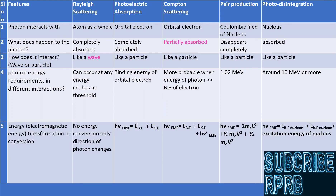Energy transformation or conversion: X-ray and gamma-ray are forms of electromagnetic energy. Upon interaction with matter, they may change to other forms of energy. In Rayleigh scattering, there is no change in energy due to interaction with the atom. In the photoelectric effect, part of the electromagnetic energy is used to raise the potential energy of the electron to zero from negative energy, and the rest appears as kinetic energy of the photoelectron — so electromagnetic energy is converted to potential energy and kinetic energy.